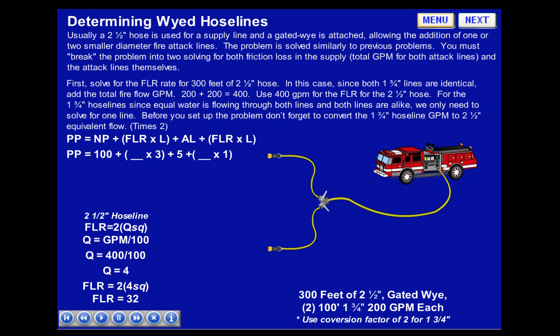FLR equals 2Q squared, and Q equals GPM over 100. In this case, GPM is 400 for both lines divided by 100, so Q equals 4. Friction loss rate equals 2 times 4 squared, or 32 per 100 feet of hose.